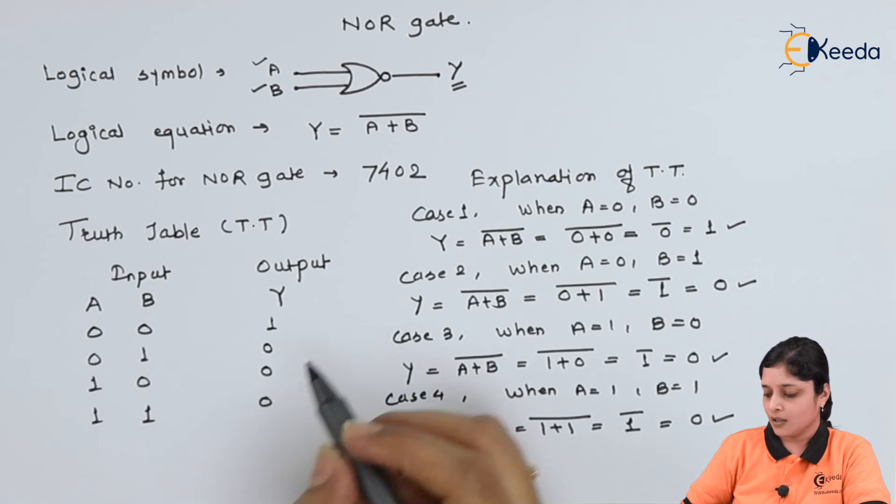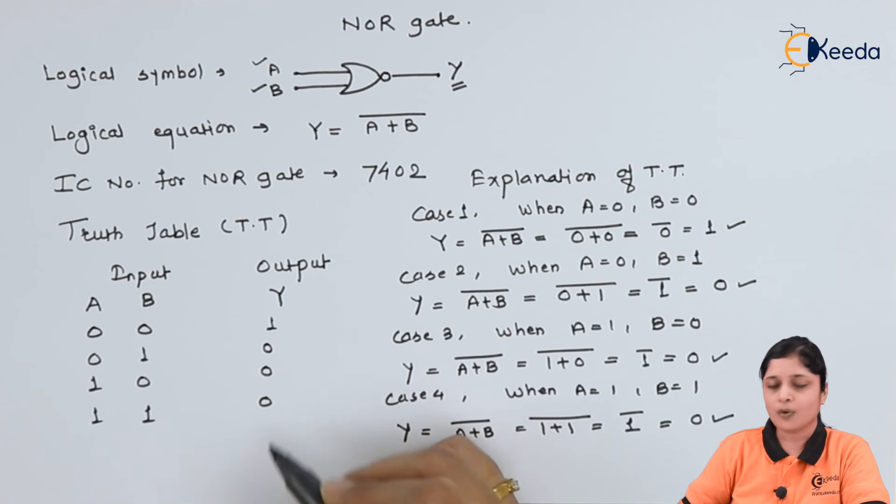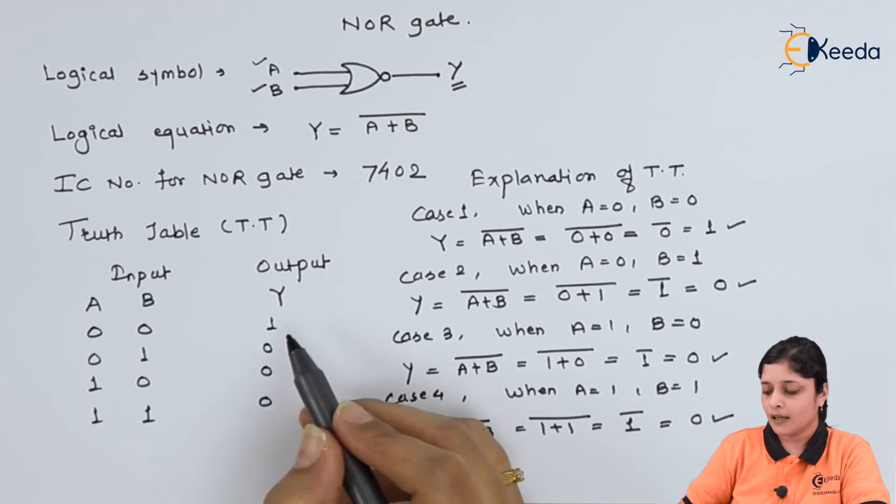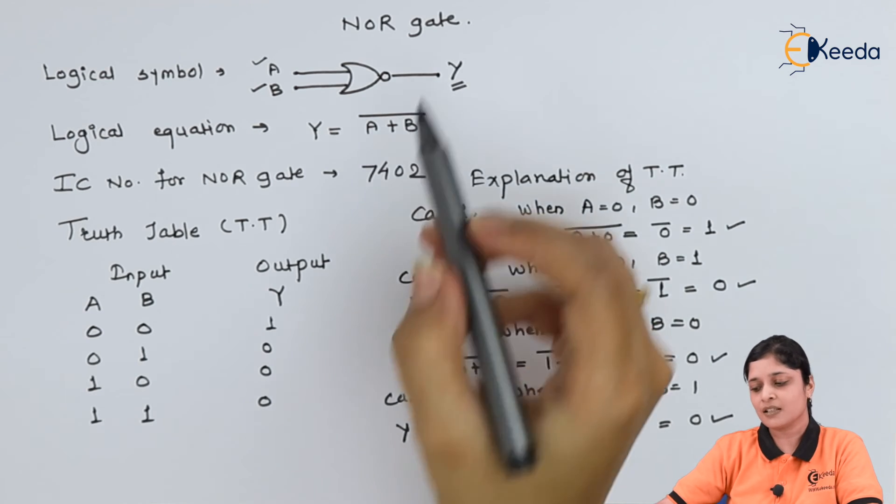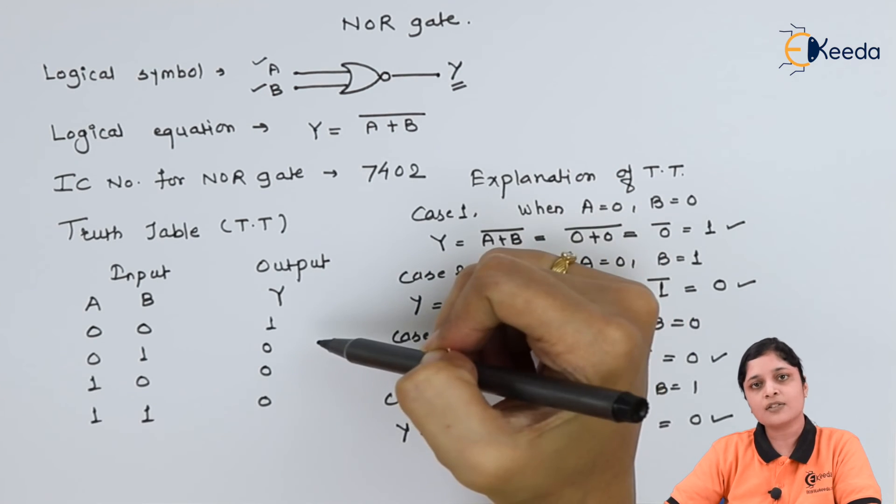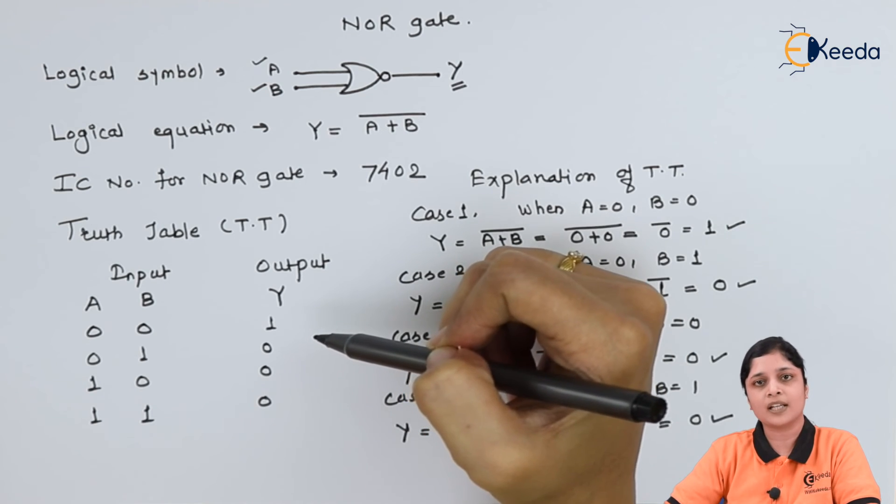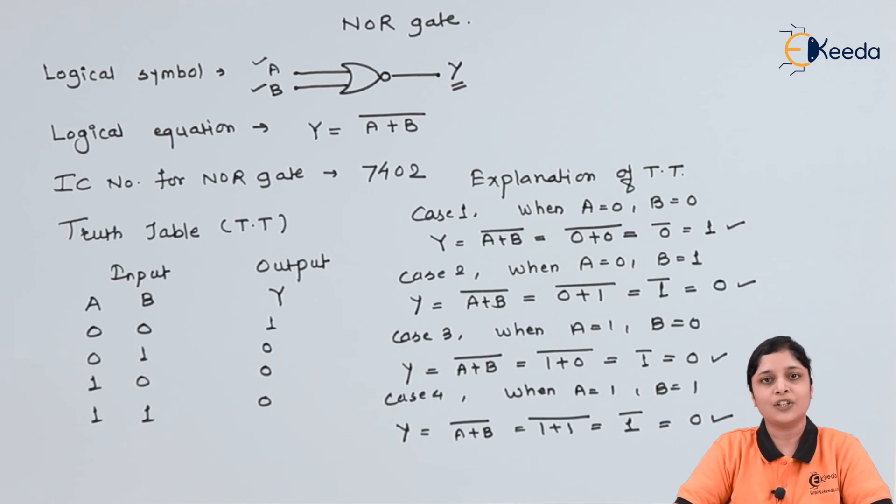You can now see all the outputs of 4 combinations. Also you can observe that whatever the output of this NOR gate, it is always the complement of the output of OR gate. Thank you for watching this video. Stay tuned with eKIDA and subscribe to eKIDA.